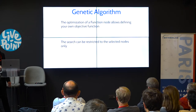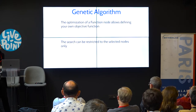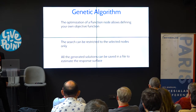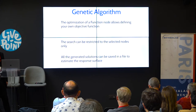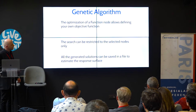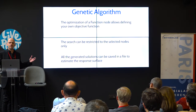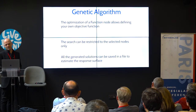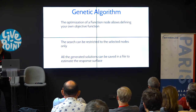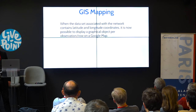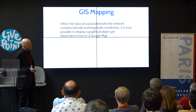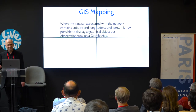As a detail, you can also select a subset of nodes and run just the genetic optimization based on that set. The last point, added just a few weeks ago, is an option that allows you to save all the solutions generated during optimization — so you can use them to estimate the response surface.